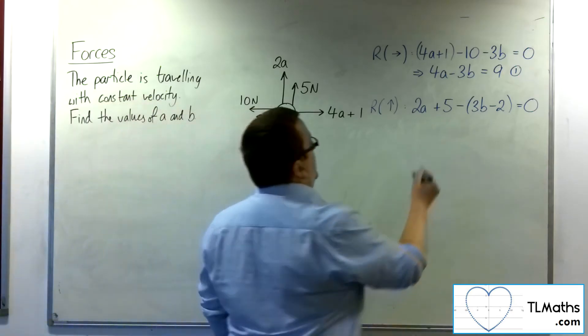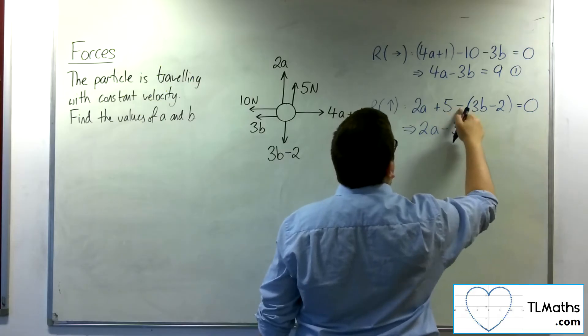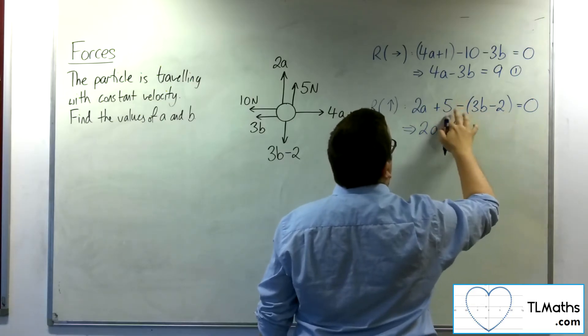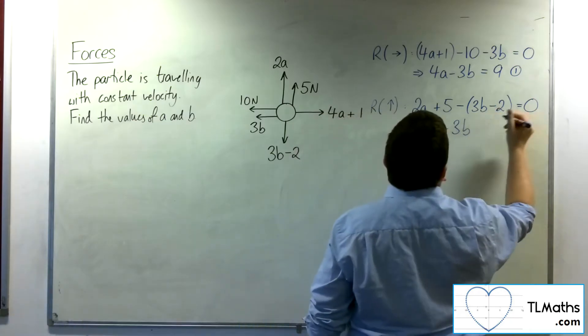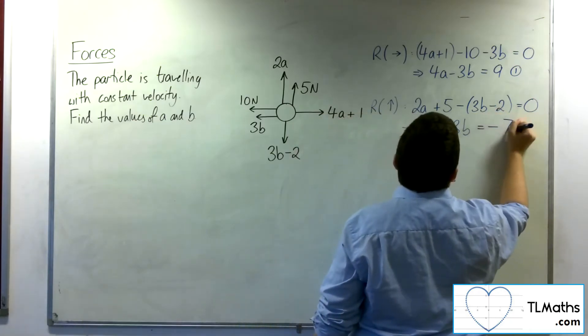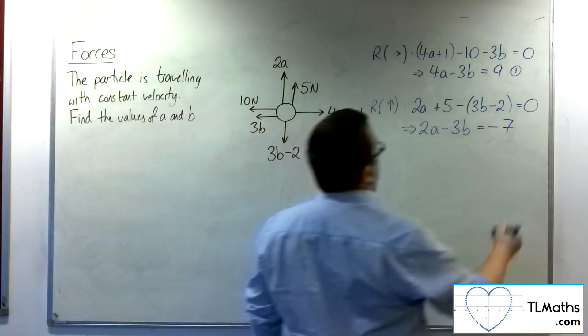So tidying that up, we've got 2A minus 3B. And I've got 5 take away minus 2. So 5 plus 2 is 7. So I can subtract 7 from both sides to get the minus 7. And that's equation number 2.